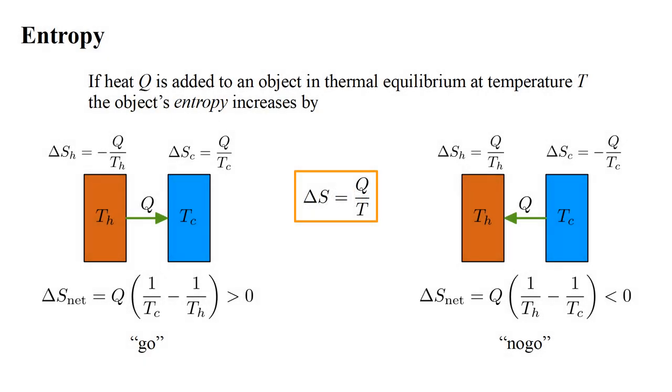So far, we haven't found any explanation for irreversibility in the fundamental laws of physics. But our analysis of the Stirling and Carnot cycles has led us to agree with Clausius. For practical purposes, a process is irreversible if it increases the entropy of the universe. No process is possible that lowers the entropy of the universe, and adding heat Q to a body at temperature T increases its entropy by delta S equals Q over T.